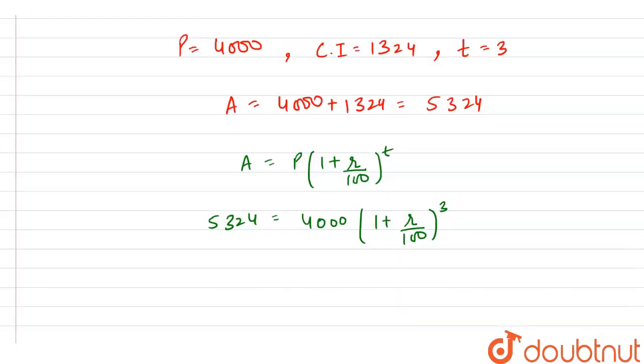If we solve this further then we can write 5324 divided by 4000 and this equals 1 plus R by 100 whole raised to power 3.